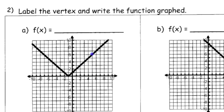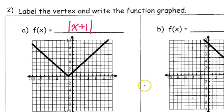On the back, I'm given the graph and supposed to write the function for it. Let's start with the vertex. This graph is to the left 1, so that would happen if we had x plus 1 inside the absolute value sign — that gives me left 1. It is on the x-axis, so it's not up or down, so I won't add anything else. The slope appears to be up 1 right 1, so I don't need anything in front. That's it for part A.